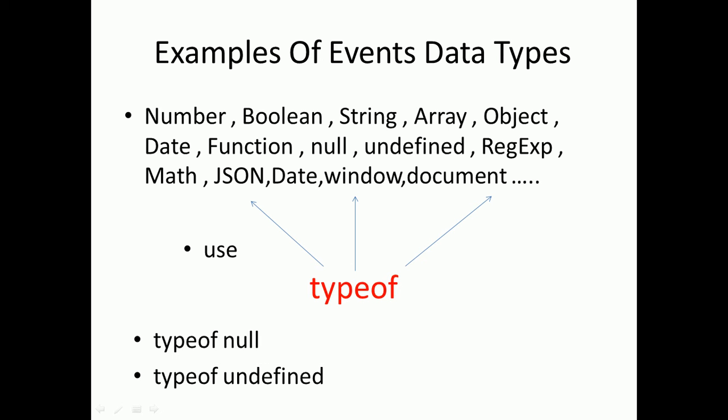You can use typeof in order to know whether an element is type of each of these event data types. If you have a string, you need to know whether it's type of string. For example, I have variable X, is it a type of string? If it's type of string, we're gonna know that it's true. If not, it's false. So typeof null is null, typeof undefined is undefined. So you need to know how to use it. Sometimes you need to use typeof.